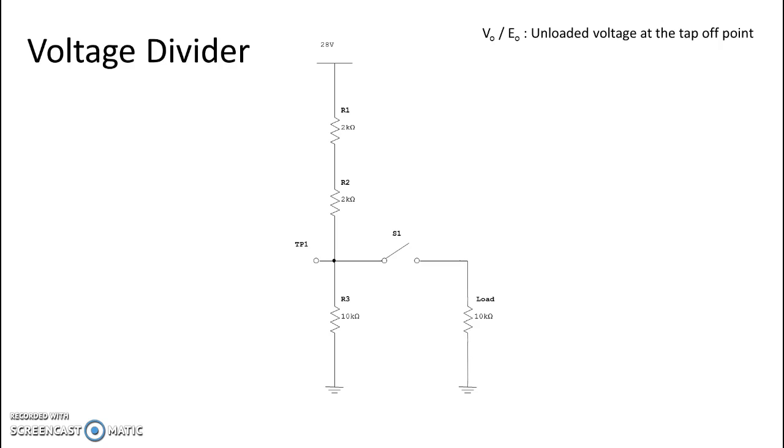So where we start is total resistance. And very simple, all of you that have been through our circuits with our series and our parallel and then our series parallel combinations. This is really easy math. We're just going to add up our three resistors to get total resistance, which ends up being 14,000 ohms.